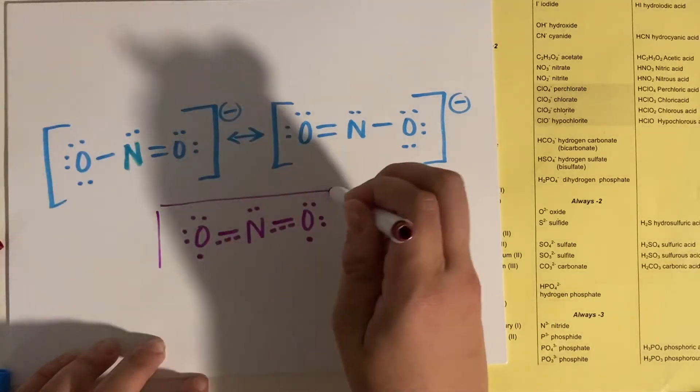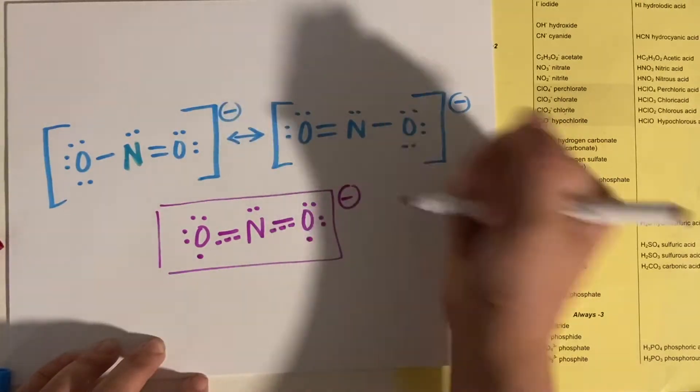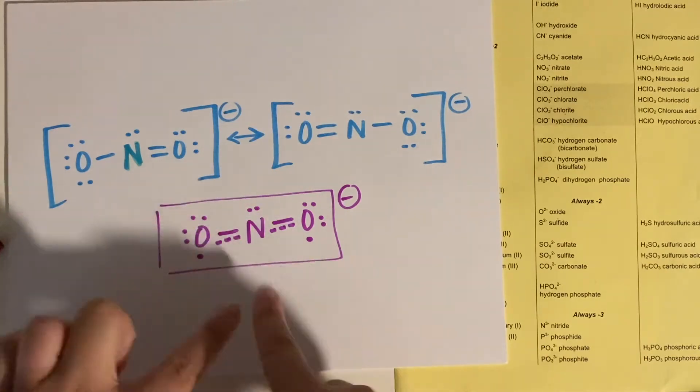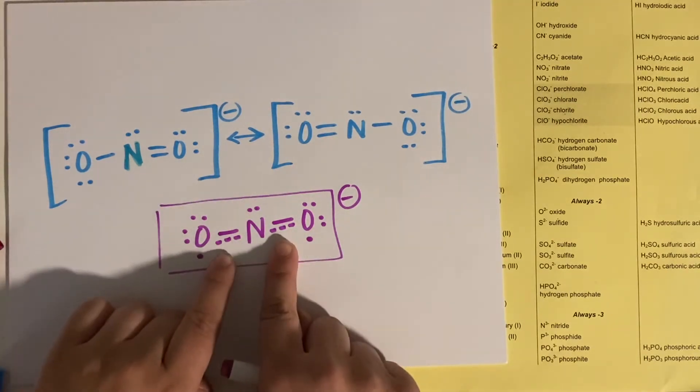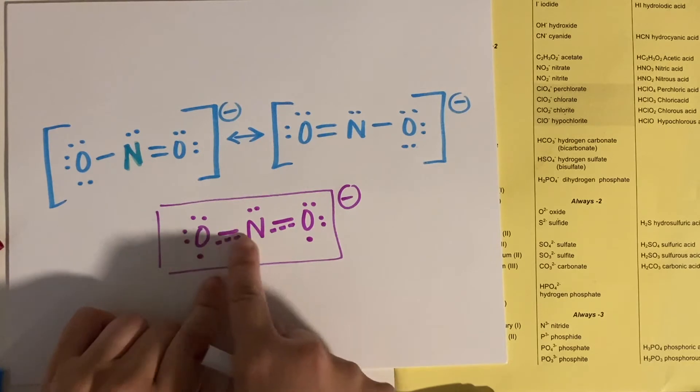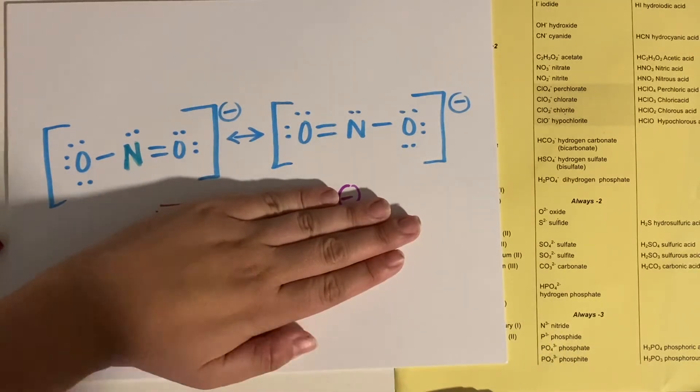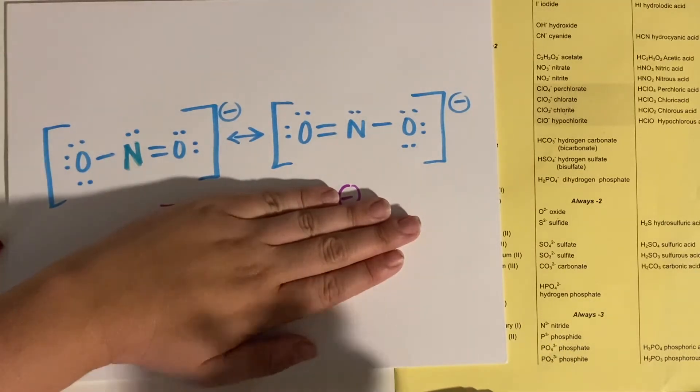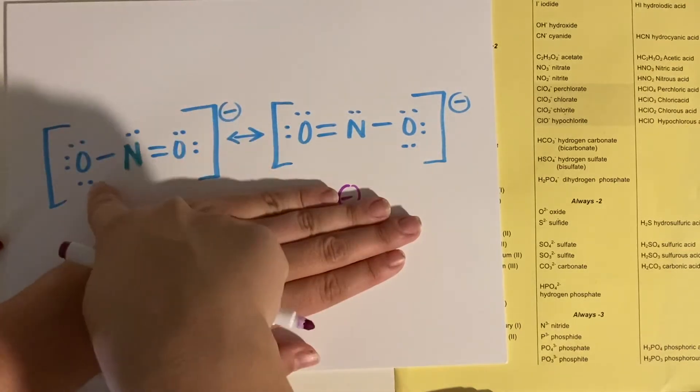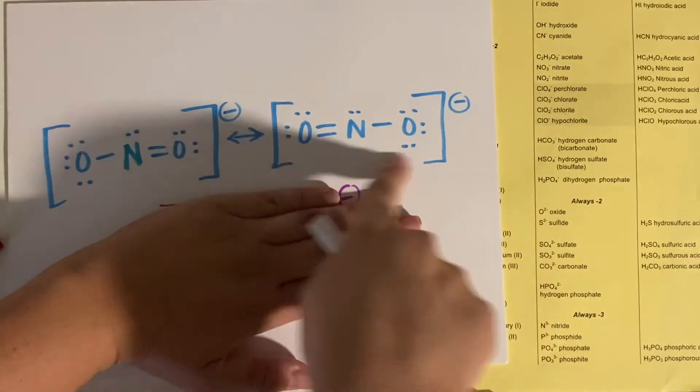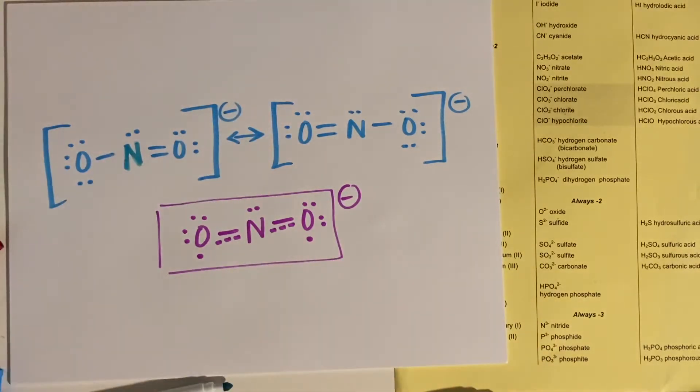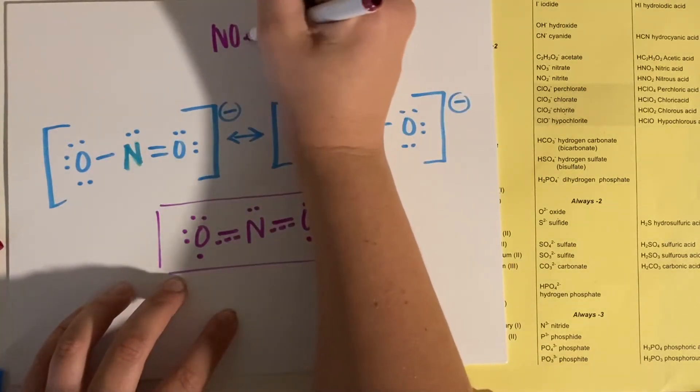So this might be just kind of a different way. Oh, don't forget your negative charge. A different way that you might see this written out with your dashed lines to show that sometimes it double bonds here, sometimes it double bonds there. Personally, I like to think about it like this, that's at least how my mind likes to conceptualize this resonance structure issue.